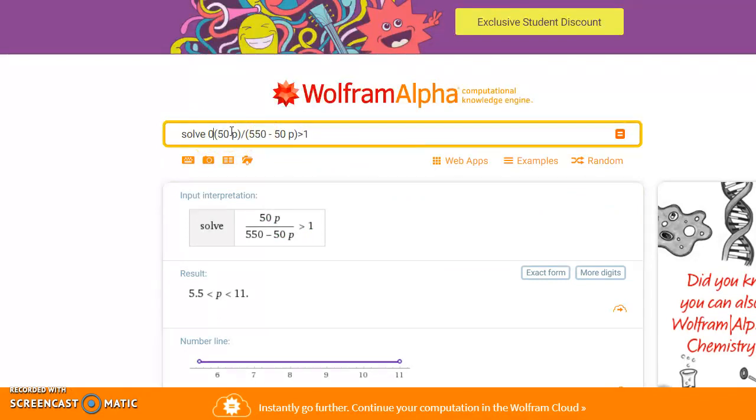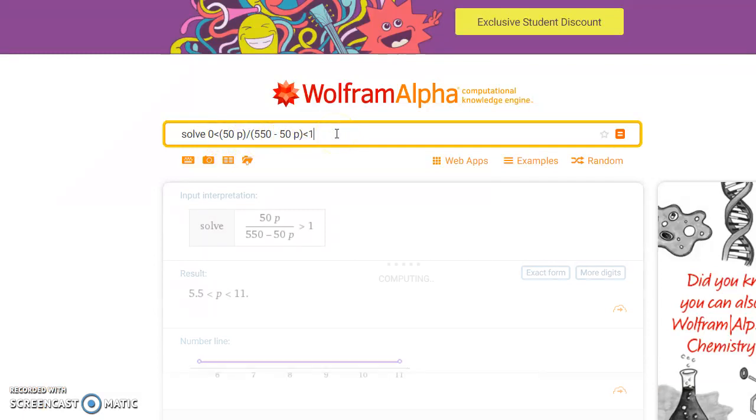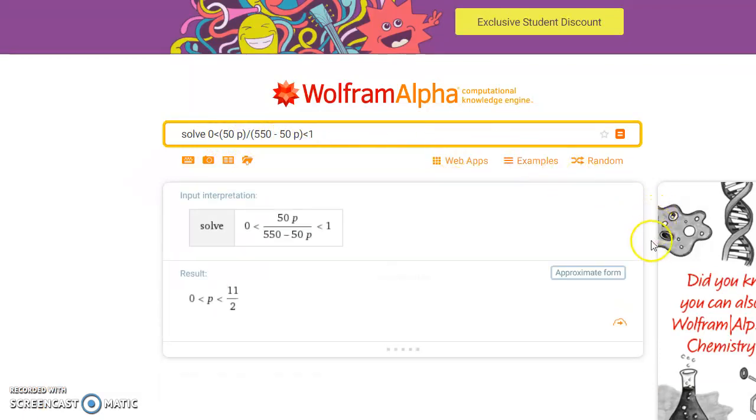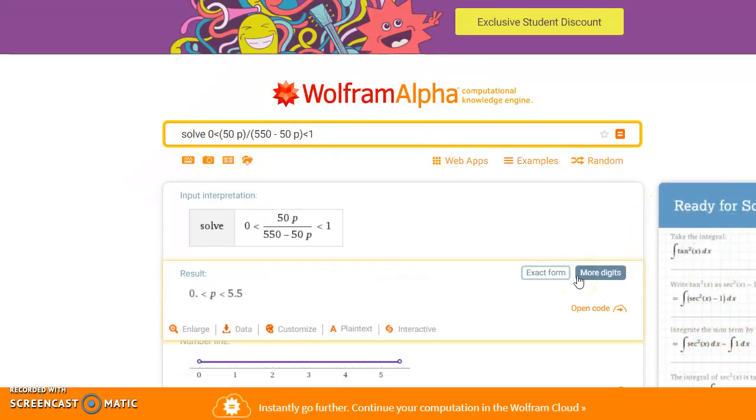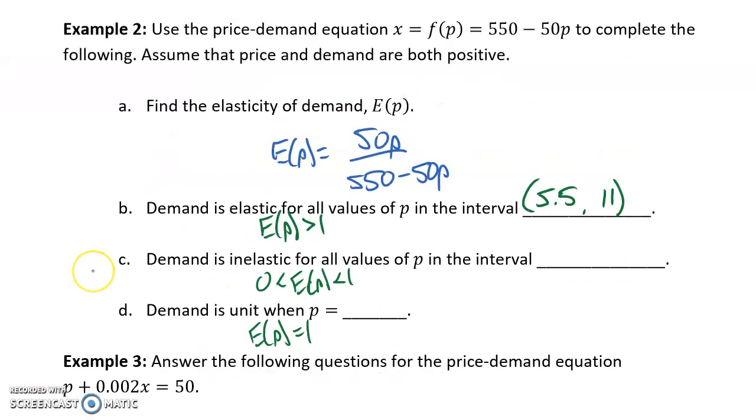If instead we solved when this function is between 0 and 1, so we have 0 as less than our elasticity of demand function, which is less than 1, and again, solved. We would find out that that would be true when p is between 0 and 5.5.